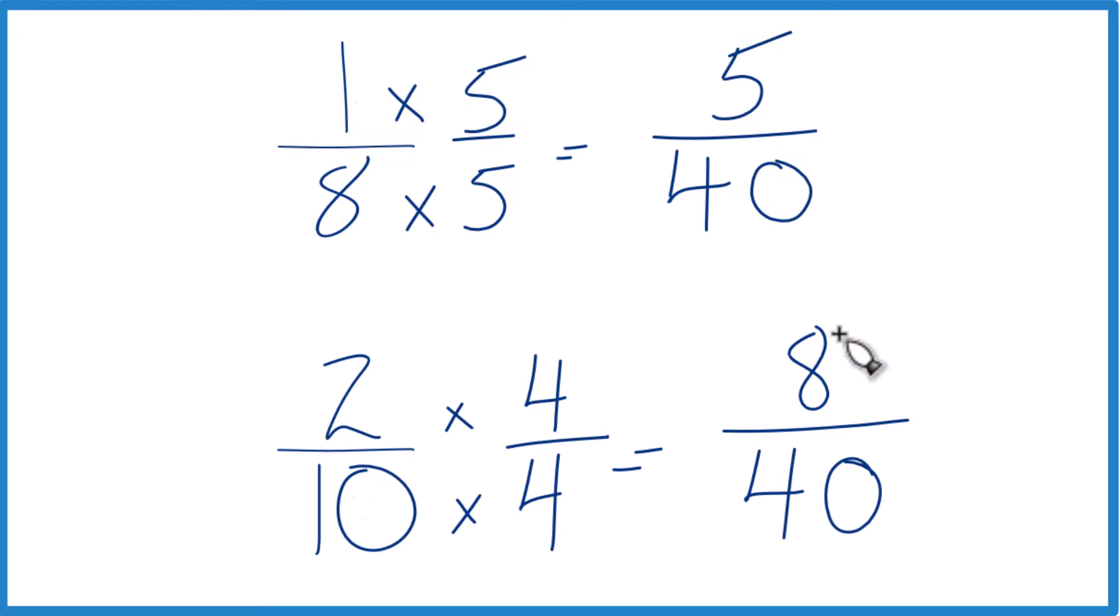Since these are the same we're just going to compare the numerators. 8 is larger than 5, so 8/40 is larger than 5/40 by 3/40. And since these are equivalent here and here, we can say that 2/10 is larger than 1/8.